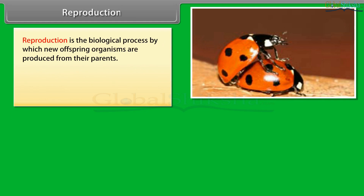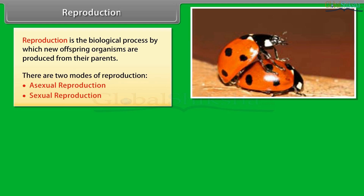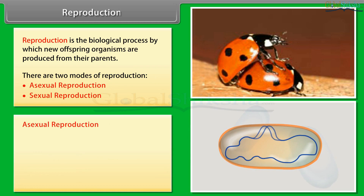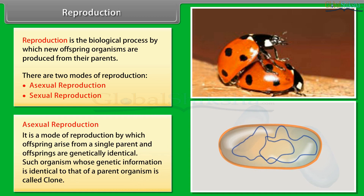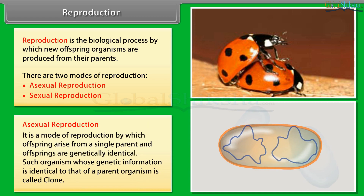Reproduction is the biological process by which new offspring organisms are produced from their parents. There are two modes of reproduction: asexual reproduction and sexual reproduction. Asexual reproduction is the mode of reproduction by which offspring arises from a single parent and offsprings are genetically identical.